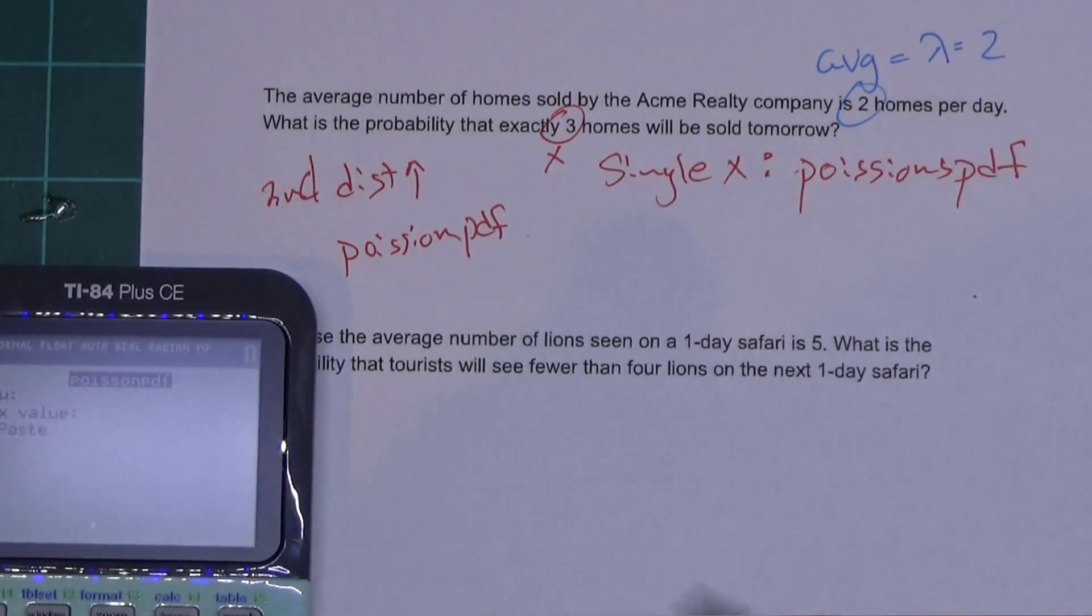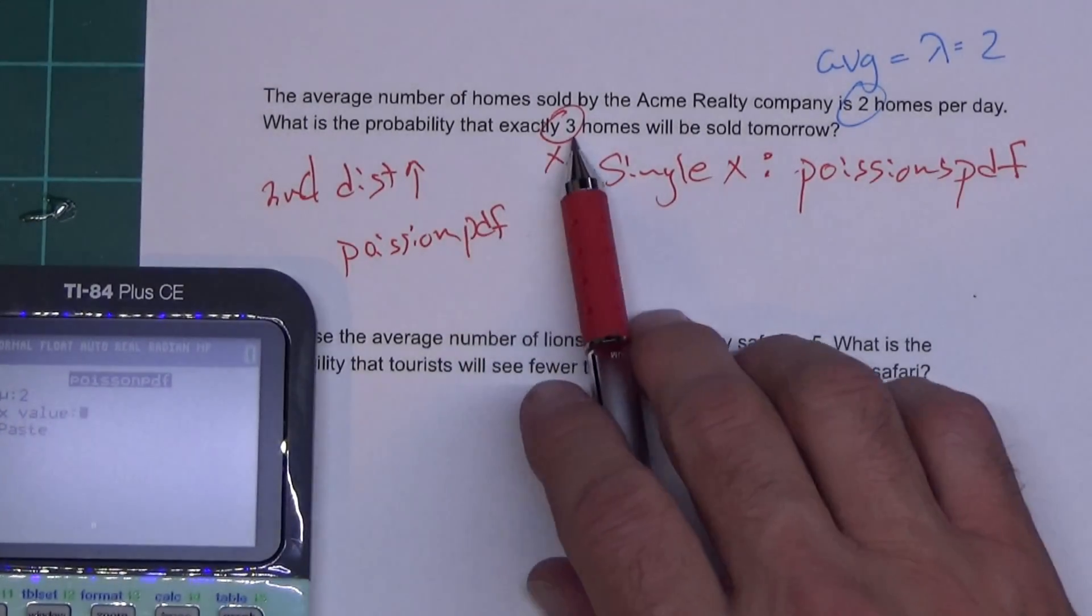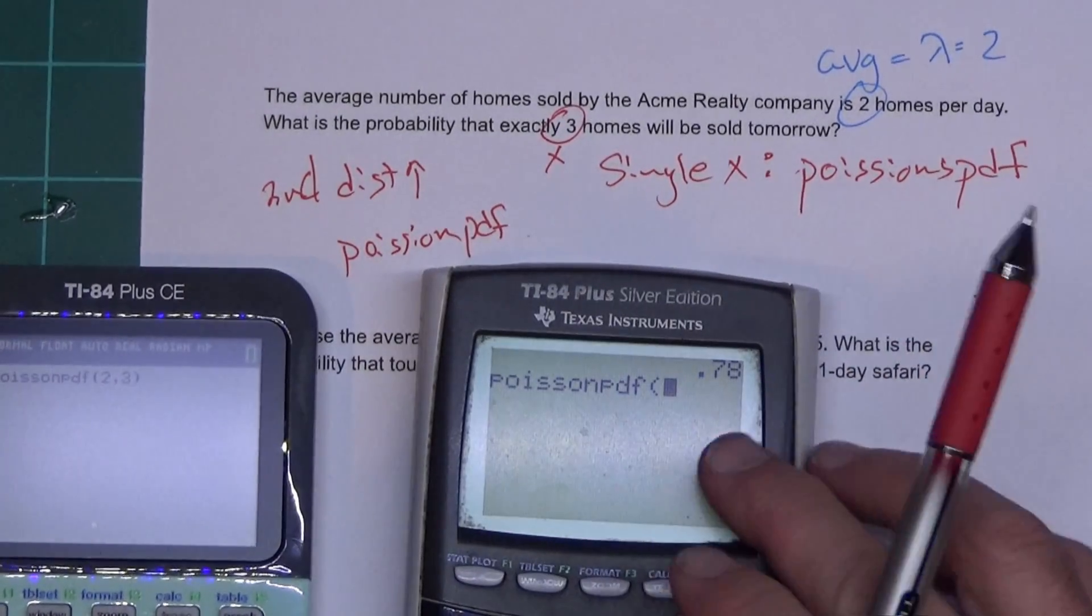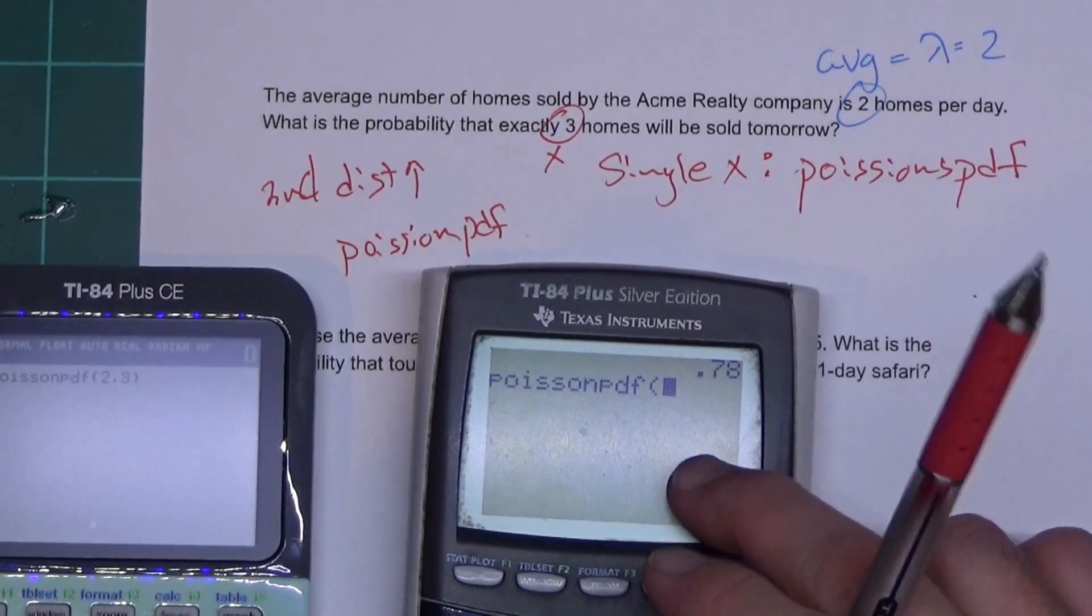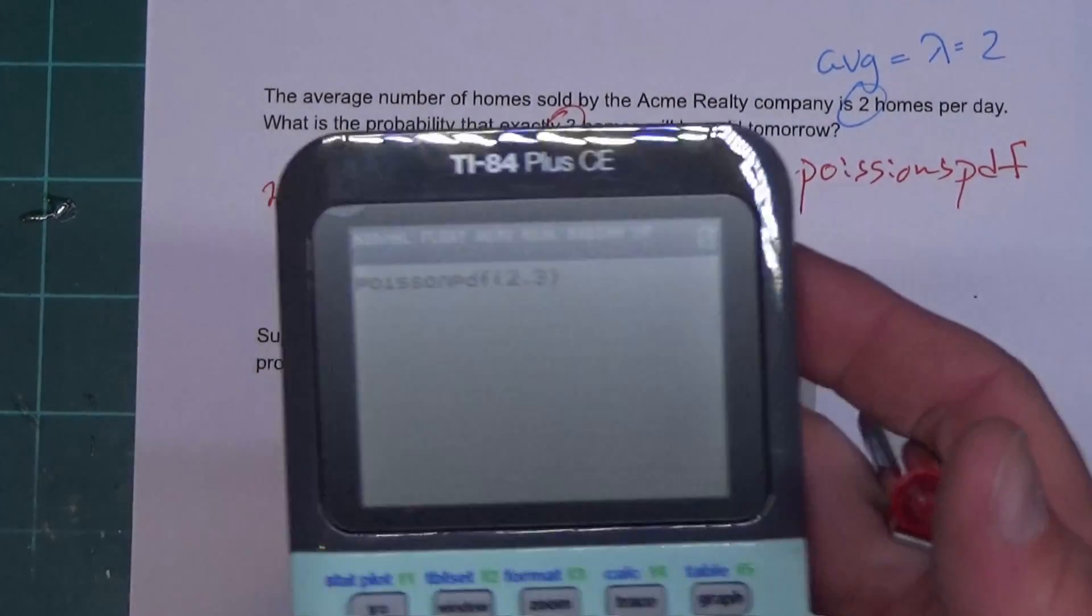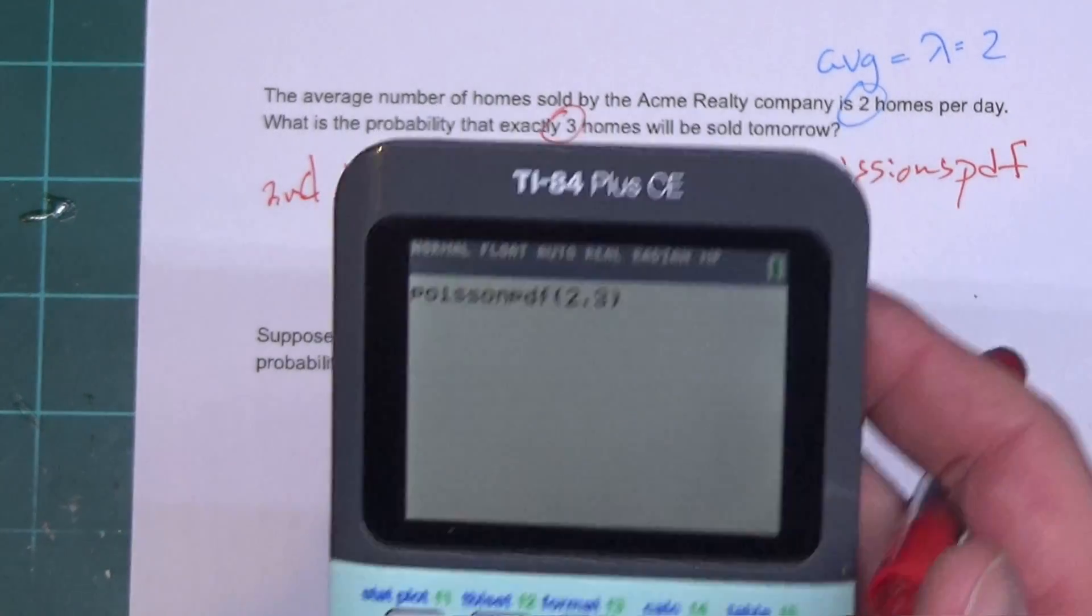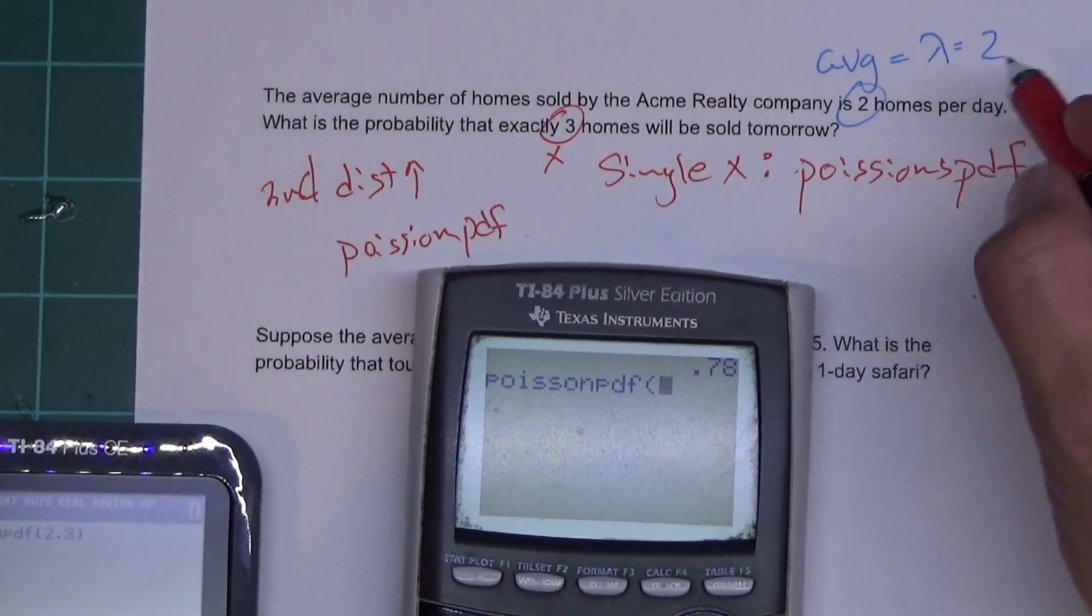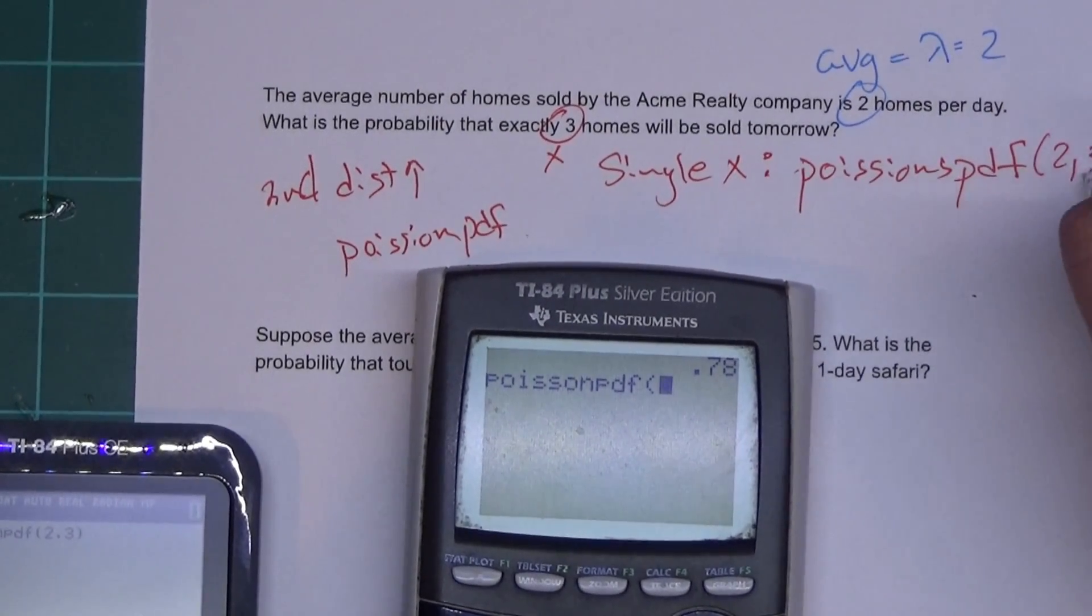Now where I said the average is 2, our X value will be 3, so we hit 3, we hit paste. Now it puts that on the screen and that shows you what you should be typing over here on this one. On this one, let me move this up so everyone can see it a little bit better. On this one you have to type in the mean comma the standard deviation, so it'd be 2 comma 3.